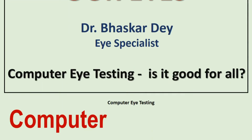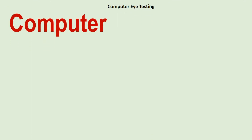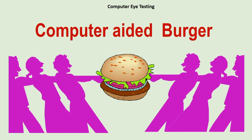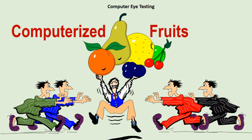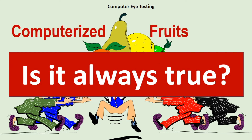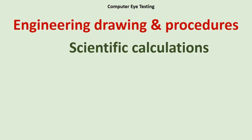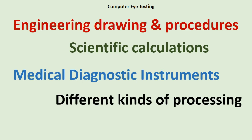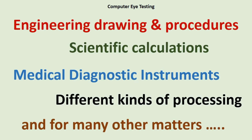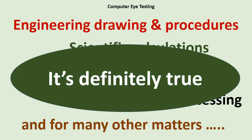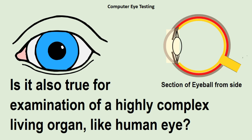The word 'computer' in general gives an impression of accuracy. Whenever we hear something computer-aided or computerized, we feel that it is most accurate and possibly the best. For engineering drawing, scientific calculations, medical instruments, and many other matters, it is definitely true — it has made many difficult tasks much easier. But is it also true for examination of a highly complex living organ like the human eye? Let's find out.